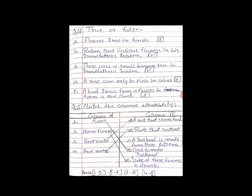Now column B: number A — A root that stores food. Number B — Roots that support. Number C — A garland is made from this flower. Number D — Used to make gulkand. Number E — Juice of these flowers is drunk.